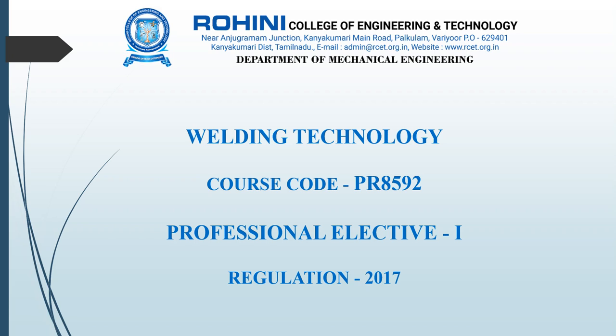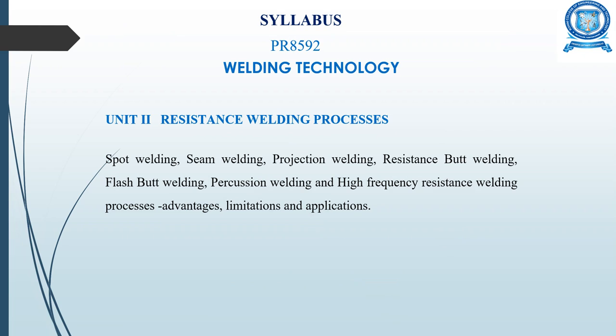Welcome to this welding technology course. The course code is PR 8592 and it is a professional elective subject for Regulation 2017. In Unit 2 we have the resistance welding process.